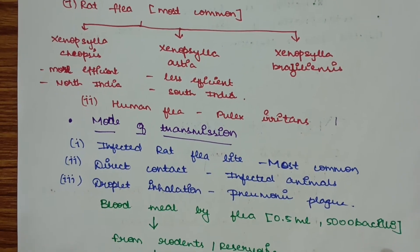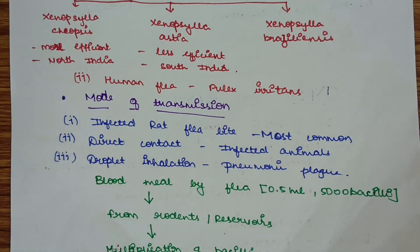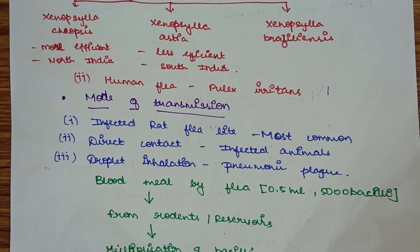Mode of transmission. The most common mode of transmission is by infected rat flea, or by direct contact with infected animals such as rodents, bandicoot, or field mice, which are the reservoirs, or by droplet inhalation. In the case of pneumonic plague, if a person has pneumonic plague and we inhale droplets from the infected person, it leads to infection known as pneumonic plague.